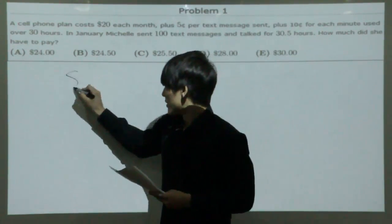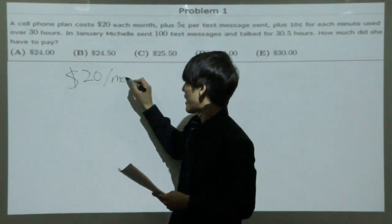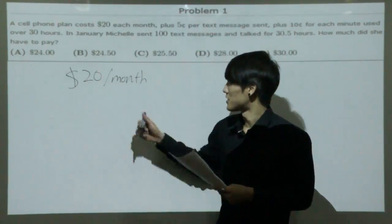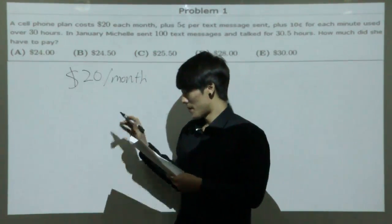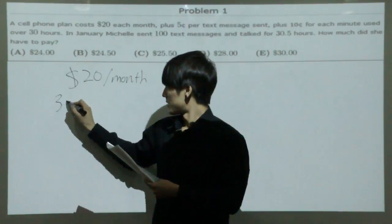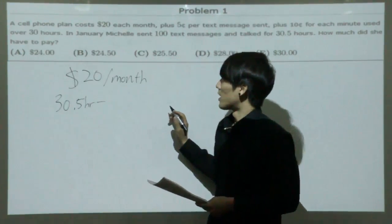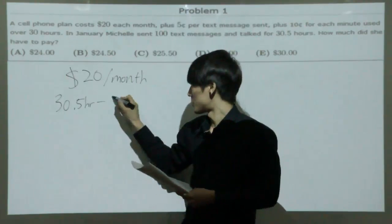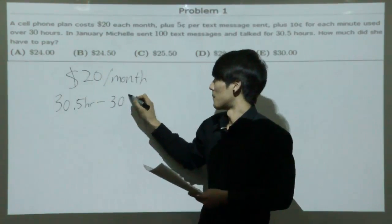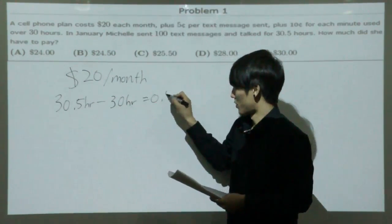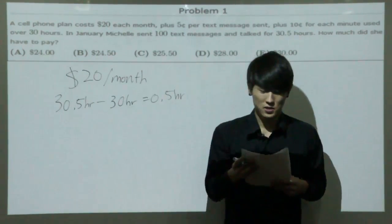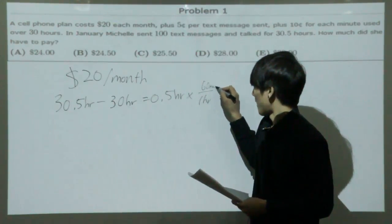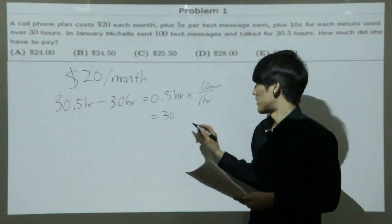First of all, there's $20 per month that she has to pay all the time, no matter how much time she calls or how many text messages she sends. Then she used 30.5 hours, and you'll have to pay 10 cents for each minute used over 30 hours. So you subtract to find the overuse of time, and that's 0.5 hours, which equals 30 minutes because there's 60 minutes in one hour.